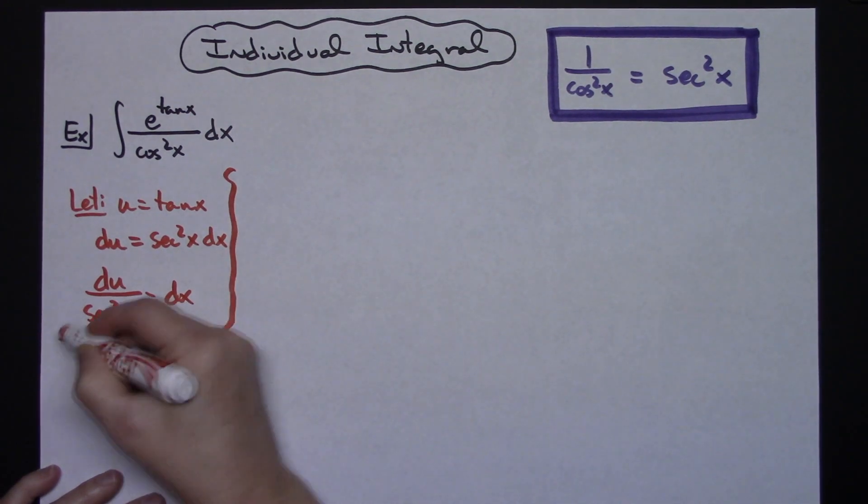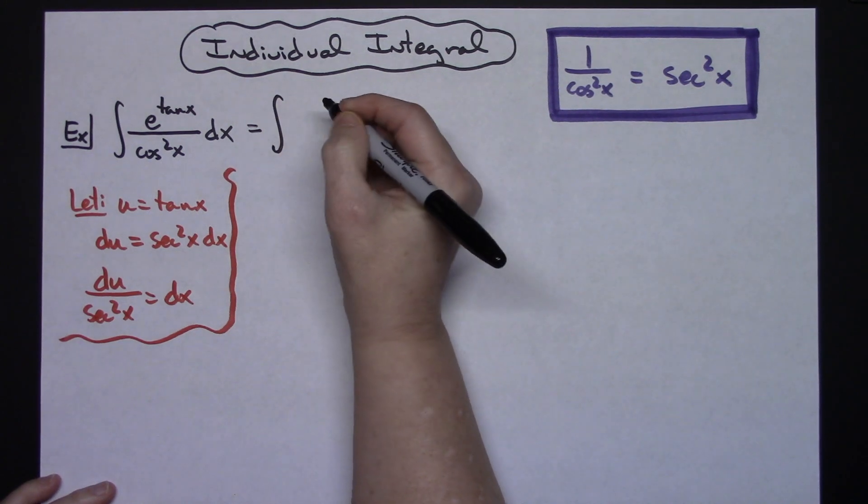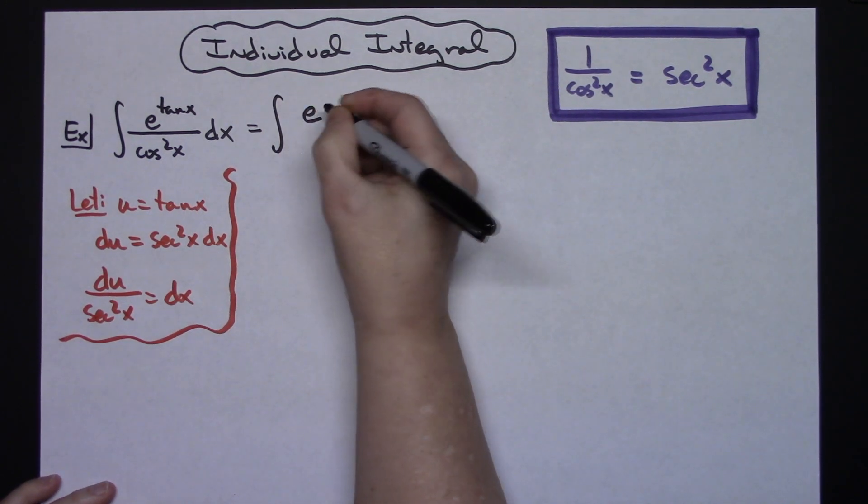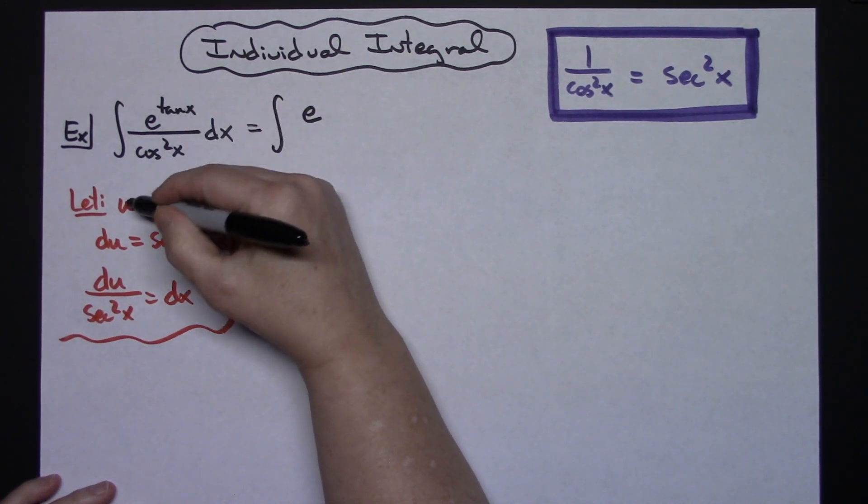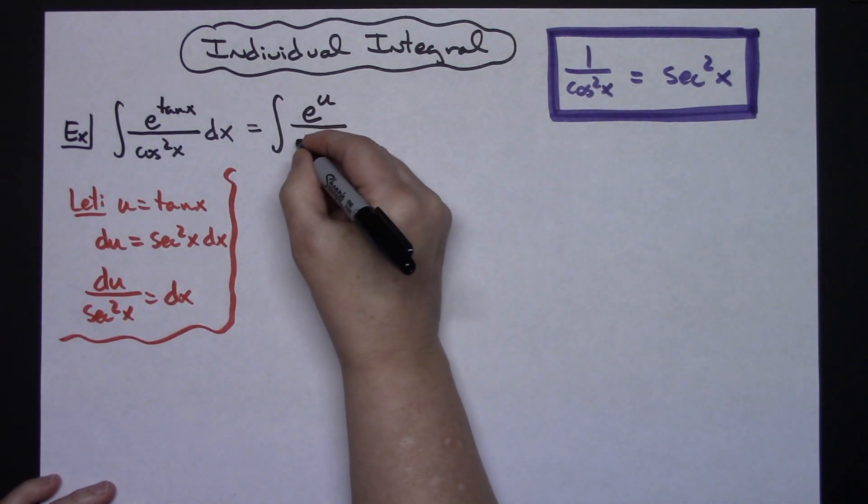From there I'm going to come up here and start making my substitutions and see where it leads. I'm going to have the integral there. I will have an e. I will replace the tangent x with my u, so e to the u all over the cosine squared x.